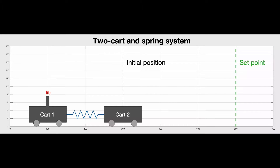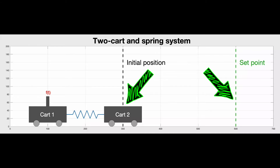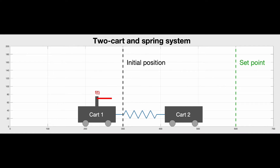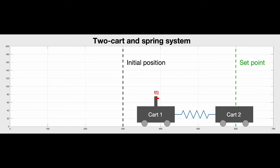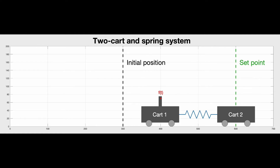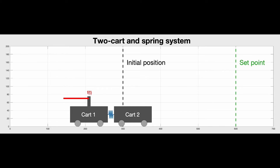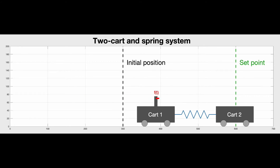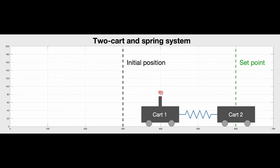To demonstrate the power of model parameter uncertainty, let's look at how we might go about controlling a two-cart spring system. The idea is that we can adjust the force applied to the handle of the first cart — this is the input — and the goal is to move the second cart over to the set point. The red line indicates the direction and magnitude of the input force, and you can see how the force is applied to get the second cart to stop right at the set point.